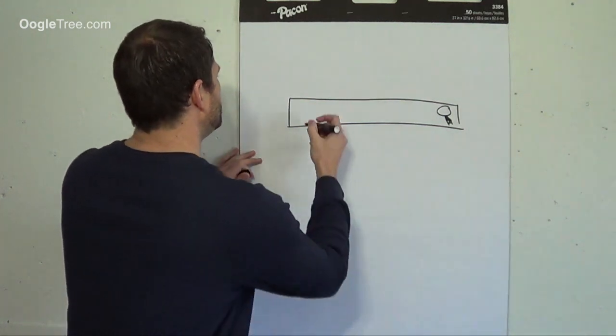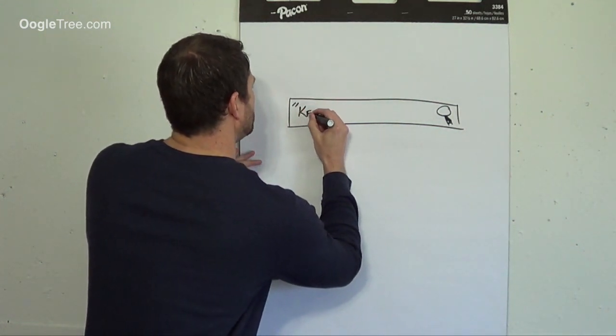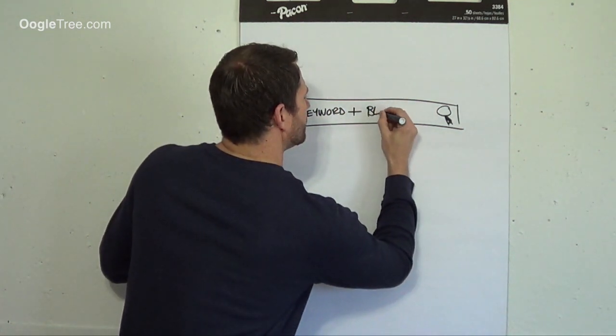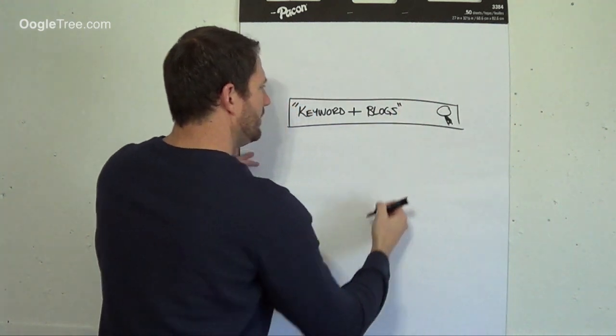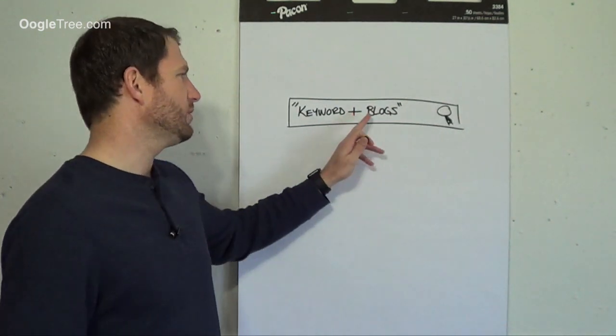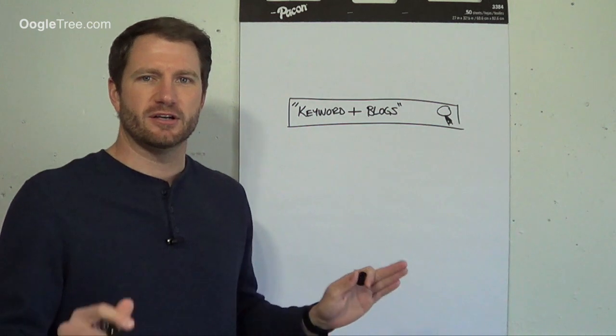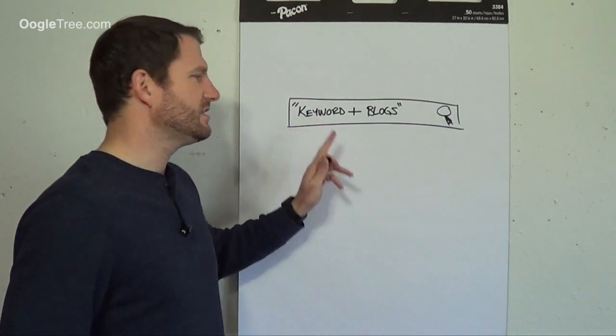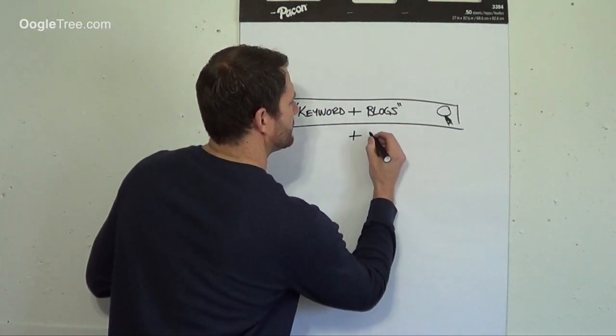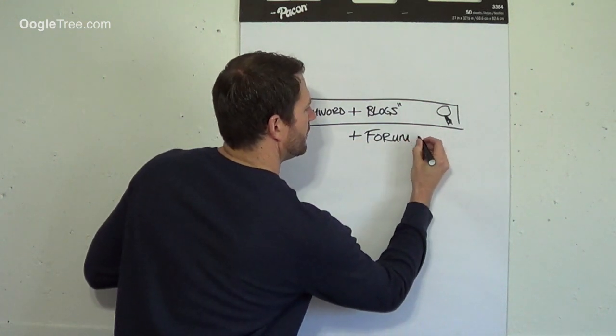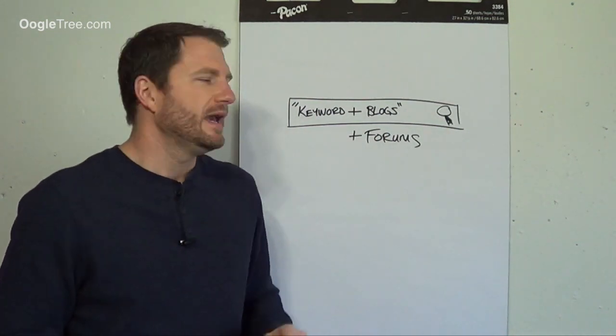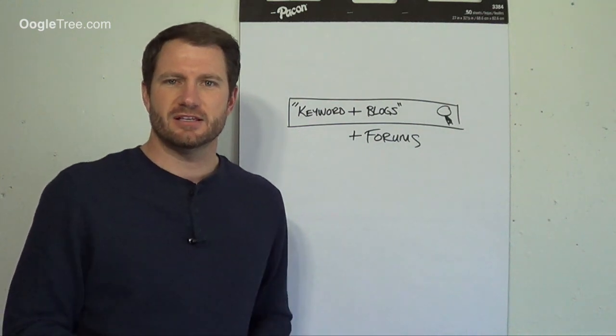What you want to do is you want to put in your keyword in quotes right here. So whatever you put it in quotes like this, it gets super specific for you. It's not just at random. And when you put this plus blogs, it's going to bring up any blogs that are indexed into Google with this keyword or keyword phrase.